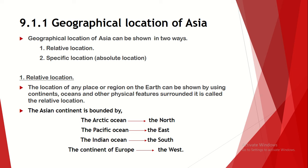When we discuss about the relative location, we have to use continents, oceans, and other physical features. These other physical features include mountain ranges and rivers. So if we can show the location of a place by using the continents, oceans, and other physical features surrounding it, we call it the relative location.